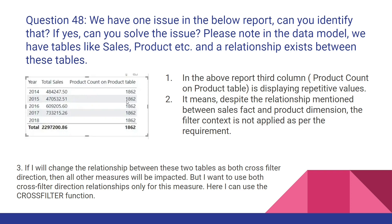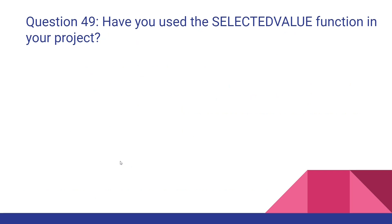Interviewers may present a report where the third column has repetitive values, meaning that despite a relationship between the sales fact and product dimension, the filter context is not applied as required. Changing the relationship to both-direction cross-filter would impact all other measures. If you want both-direction cross-filtering only for one specific measure, use the CROSSFILTER function.